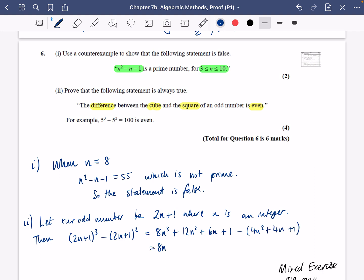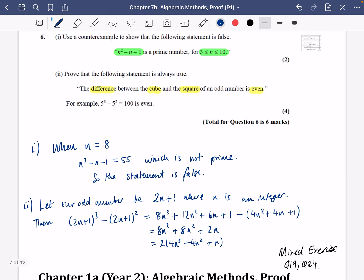So we have here 8n³ + 8n² plus 2n. The ones are going to cancel. We can then take a factor of two out, so we have 2(4n³ + 4n² + n). And so we can say here this is even. Hence, the statement is always true.